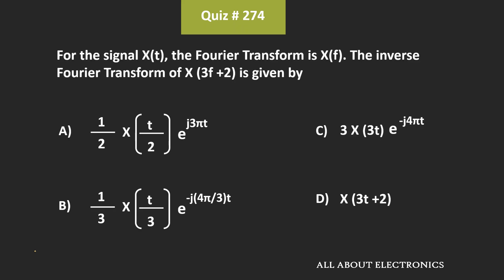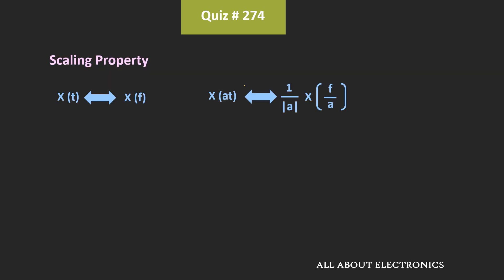Hey friends, welcome to the YouTube channel ALL ABOUT ELECTRONICS. So, in this question, we have been given that for the signal x, the Fourier transform is equal to X(f). We have been asked to find the inverse Fourier transform of X(3f+2).